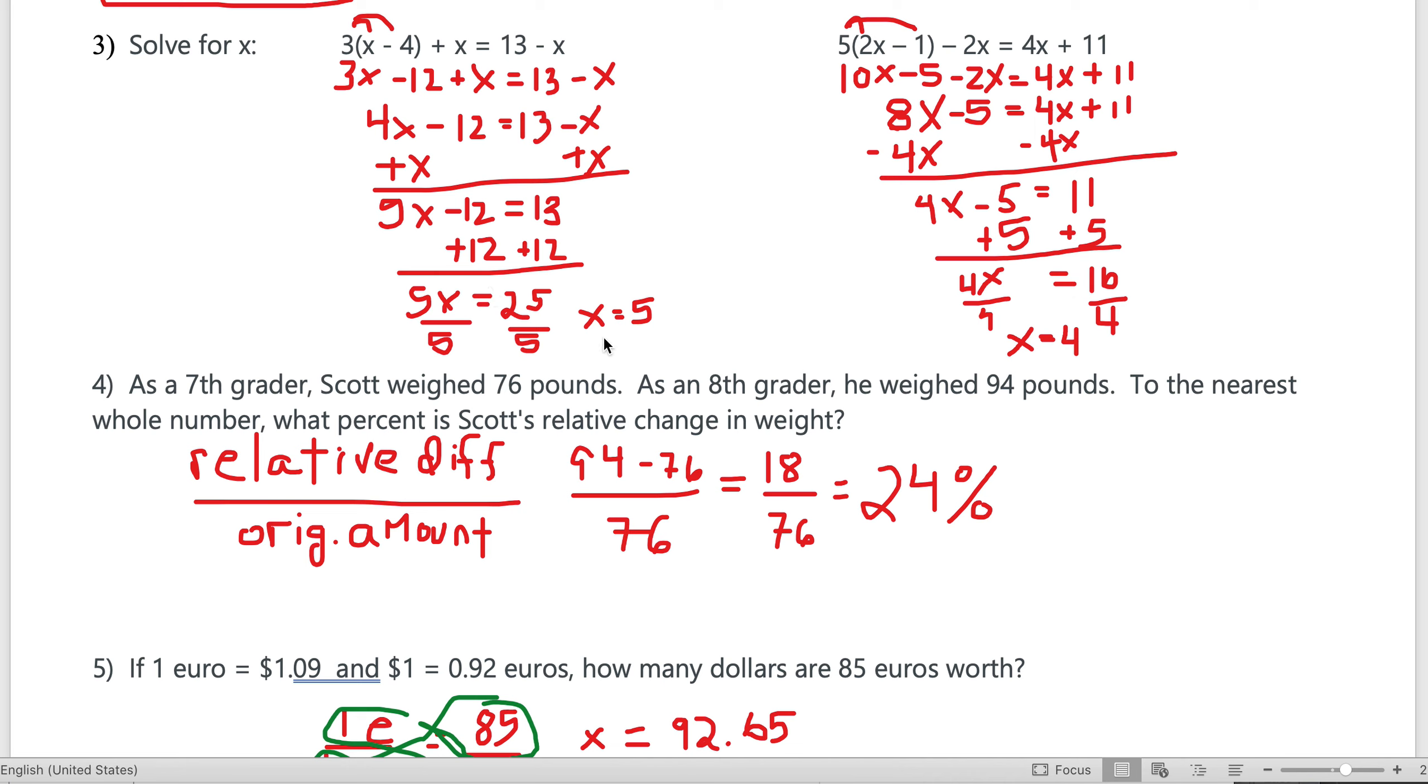4x - 12 = 13 - x. Always start with the smallest number of x's when on opposite sides: opposite side, opposite operation. Add x to both sides: 5x - 12 = 13. Standard two-stepper: add 12, divide by 5, x is 5.